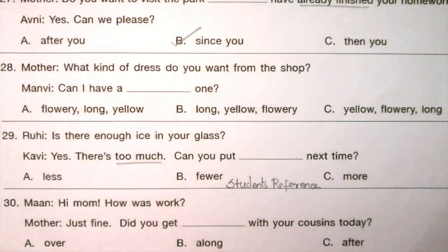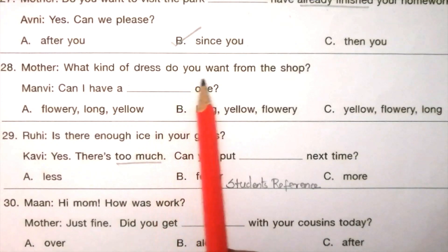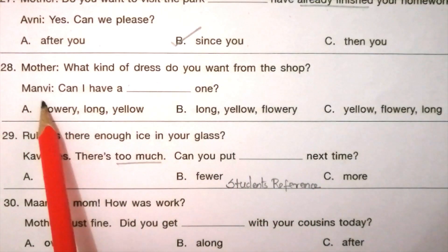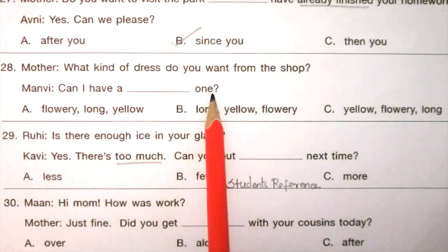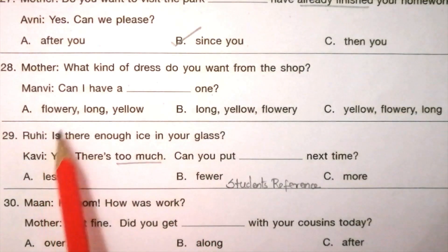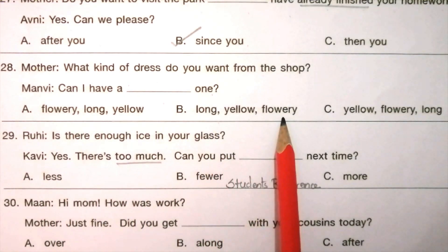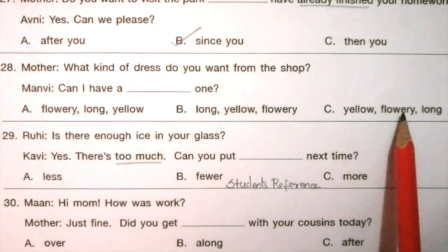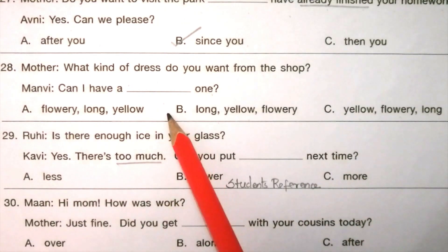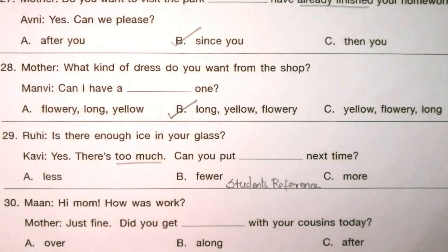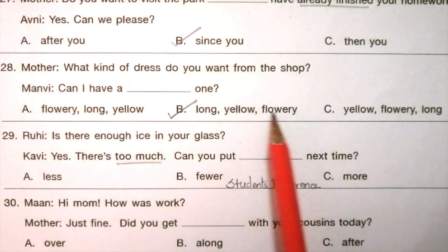Question 28 — Mother: What kind of dress do you want from the shop? Manvi: Can I have a ___ one? Options: A) flowery, long, yellow; B) long, yellow, flowery; C) yellow, flowery, long. The answer is B: long, yellow, flowery. Can I have a long, yellow, flowery one?